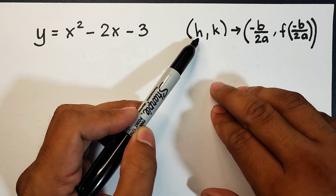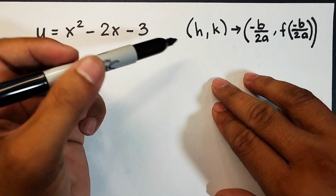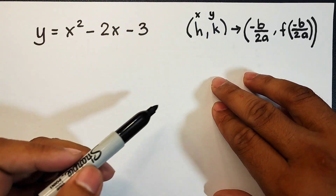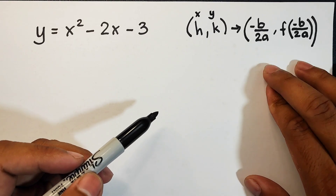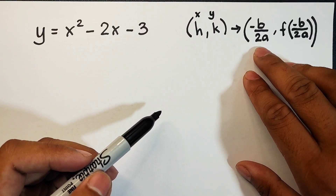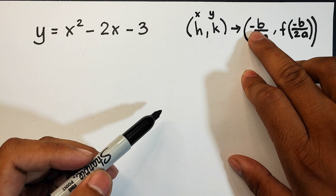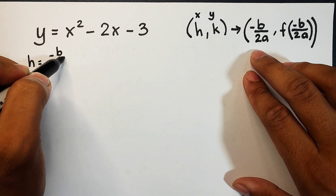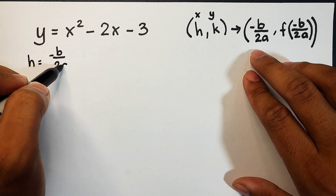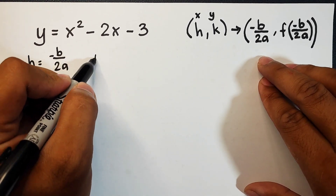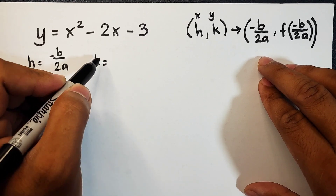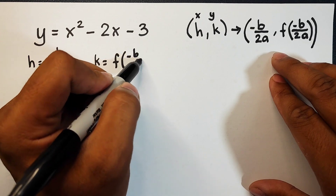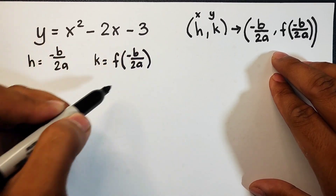Remember guys that the vertex of a quadratic function or a parabola is represented by h comma k. This h is your x-coordinate, this k is your y-coordinate. The formula we're going to use: for h we will use negative b over 2a, and for k we will use the formula f of negative b over 2a.